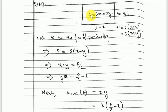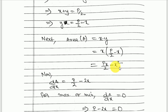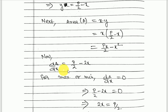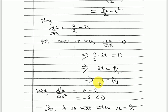Substituting y = P/2 − x into the area formula: A = x(P/2 − x) = Px/2 − x². Now the area is in terms of the single variable x. Differentiating: dA/dx = P/2 − 2x. For maximum or minimum, setting the first derivative to zero gives x = P/4.